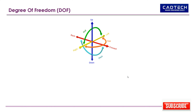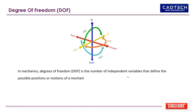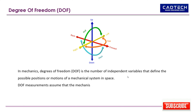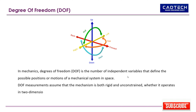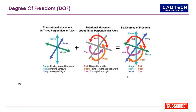In mechanics, degrees of freedom (DOF) is the number of independent variables that define the possible positions or motions of a mechanical system in space. DOF measurements assume that the mechanism is both rigid and unconstrained, whether it operates in two-dimensional or three-dimensional space, in the context of the Cartesian coordinate system.